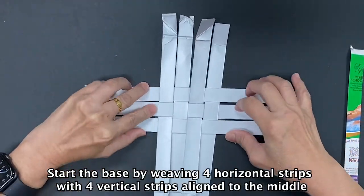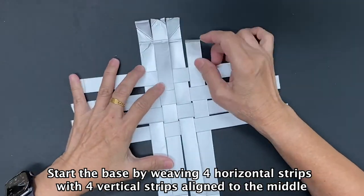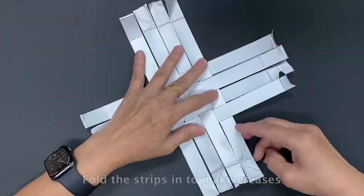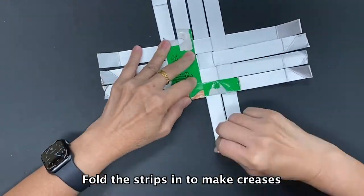Start the base by weaving 4 horizontal strips with 4 vertical strips aligned to the middle. Fold the strips in to make creases.